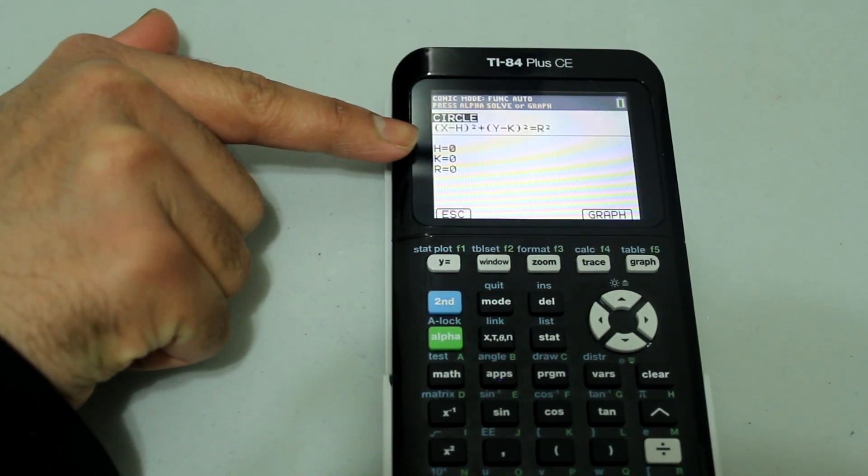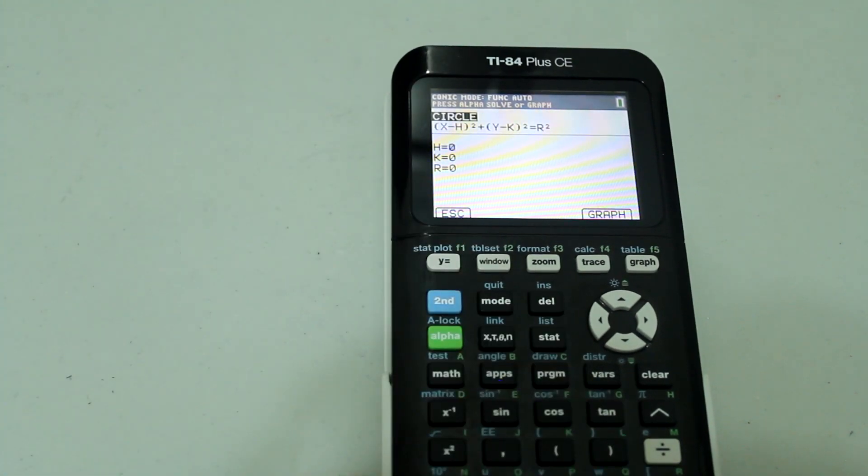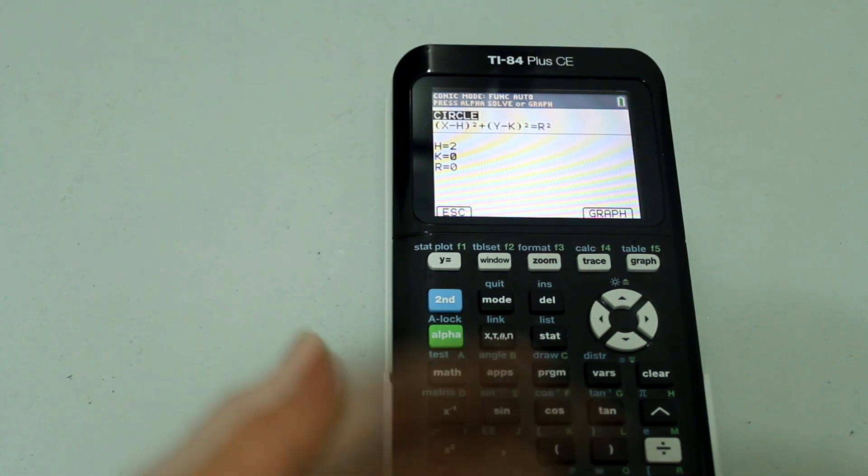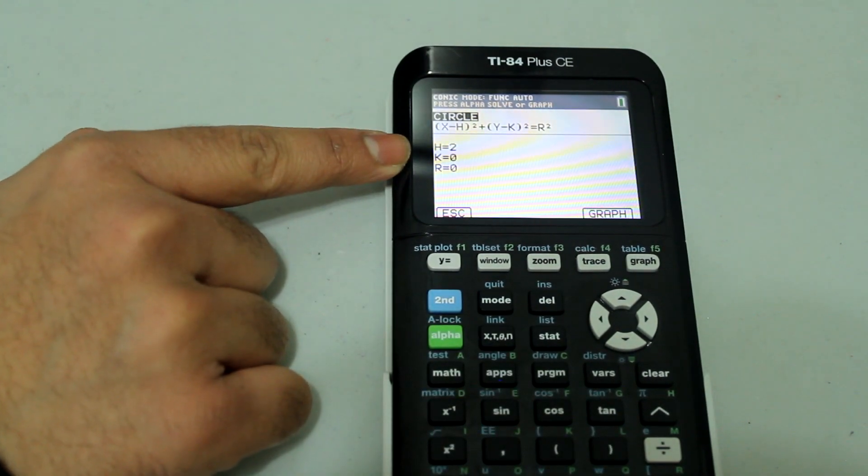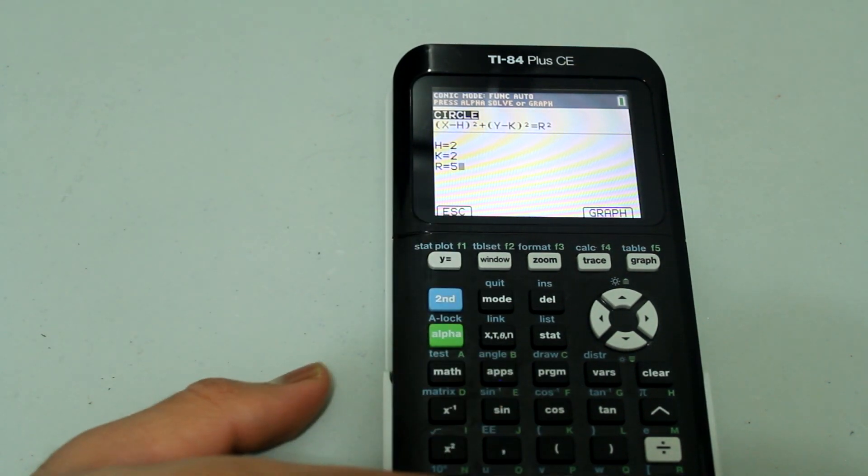And now we are just going to input values of h, k and r. So the value of h is positive 2, the value of k is positive 2, and the value of r is just 5.